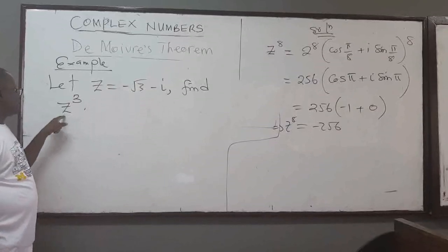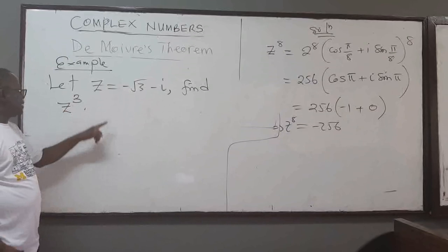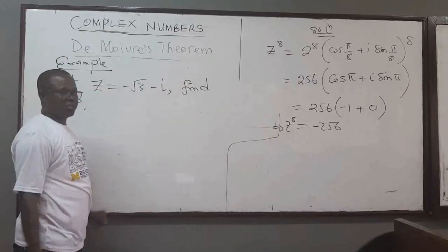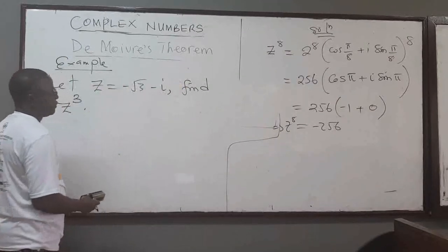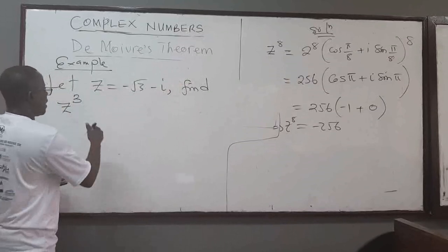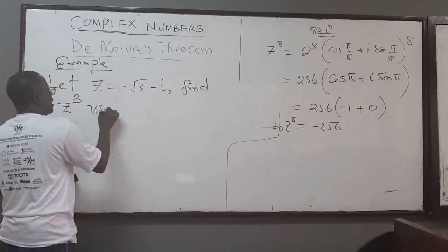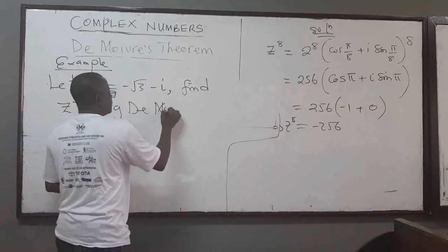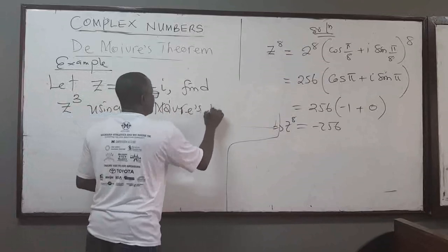You have a complex number and it's not in polar form, but you want to find z raised to the power 3. We want to use De Moivre's theorem, so first write this in polar form. We've already covered this in our previous lecture.